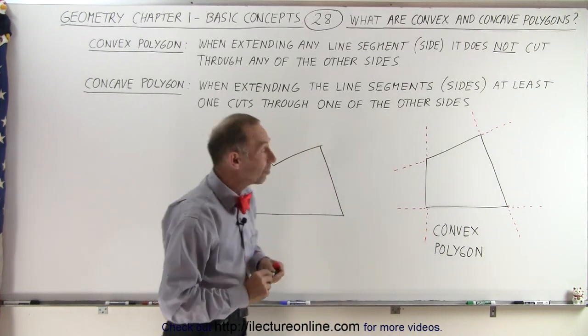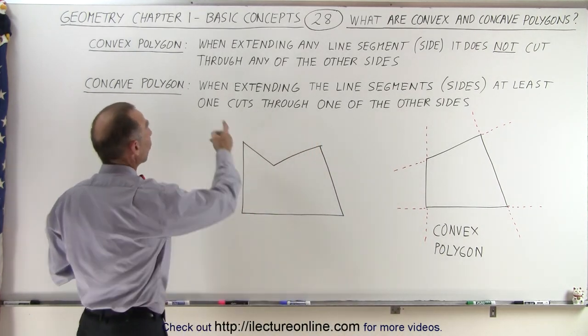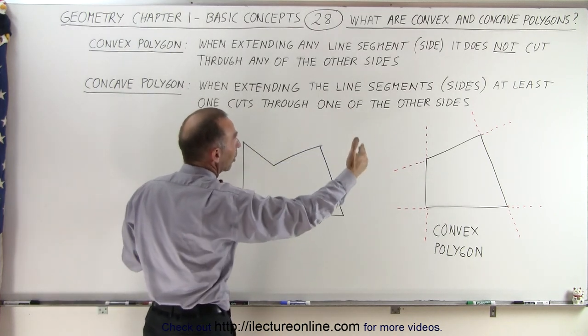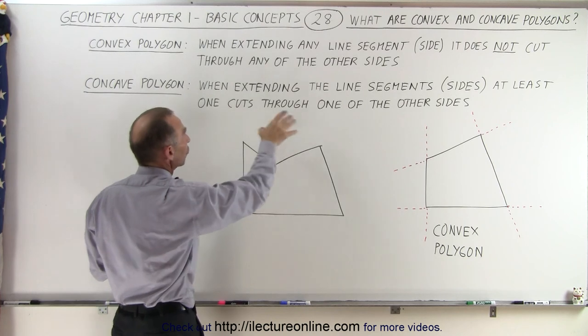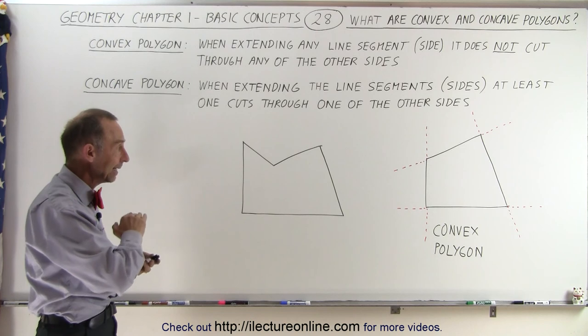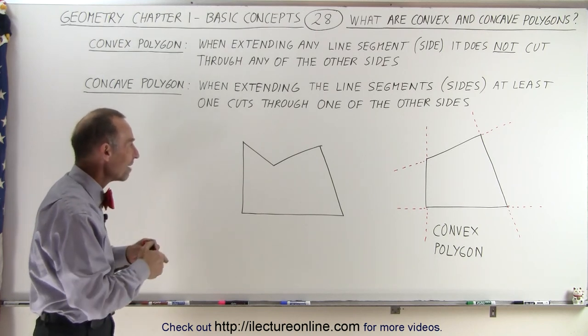Now a concave polygon is defined as such. A concave polygon is a polygon when we extend the line segments, or the sides as we would call them, at least one of them cuts through one of the other sides. So if one of them cuts through another side when we extend it, it is not a convex polygon, it is considered a concave polygon.